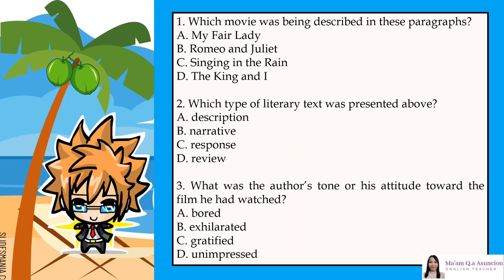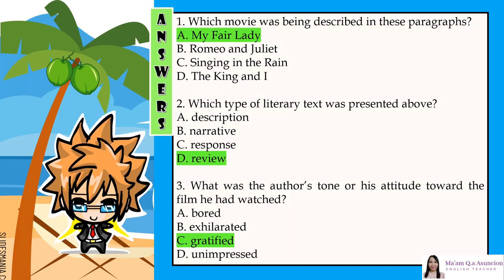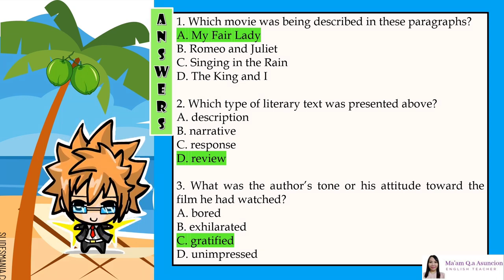Question 5: Which movie was being described in these paragraphs? A. My Fair Lady. B. Romeo and Juliet. C. Singing in the Rain. D. The King and I. Which type of literary text was presented above? A. Description. B. Narrative. C. Response. D. Review. What was the author's tone or his attitude toward the film he had watched? A. Bored. B. Exhilarated. C. Gratified. D. Unimpressed. The answers are: 1. A — My Fair Lady. 2. D — Review. 3. C — Gratified.